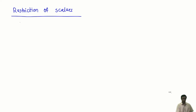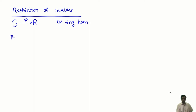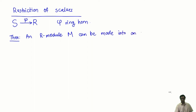Suppose I have a ring R, not necessarily commutative, and suppose I have another ring S. I am going to change from R to S. What do I have? I have a ring S together with a ring homomorphism φ from S to R. If I have a module over R, then an R-module M can be made into an S-module.